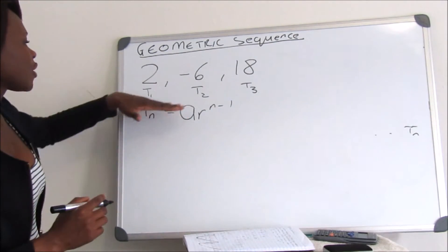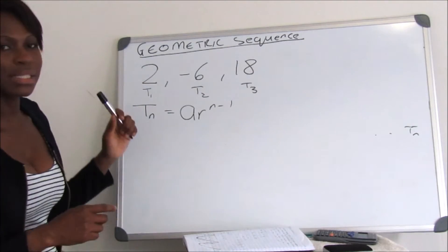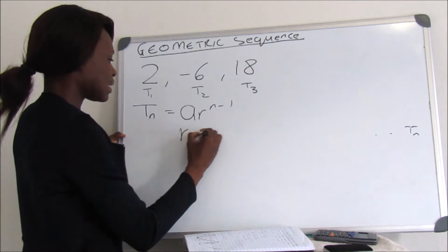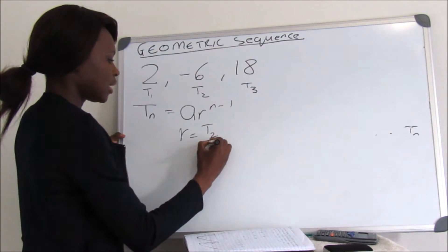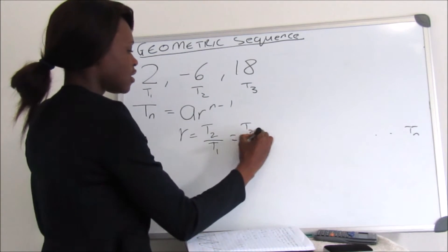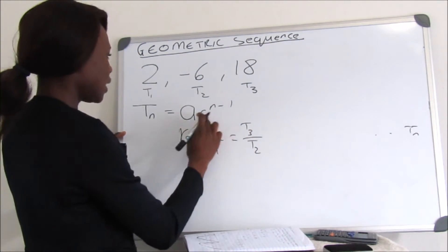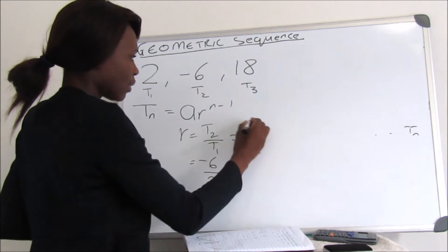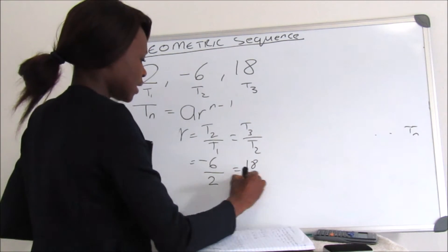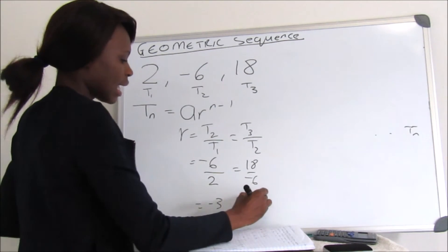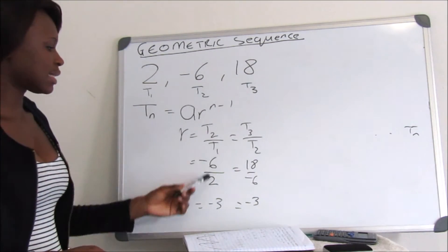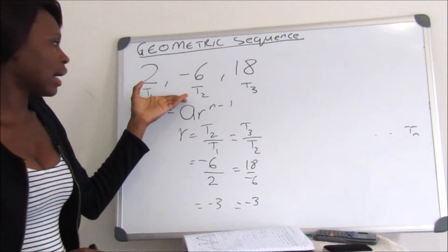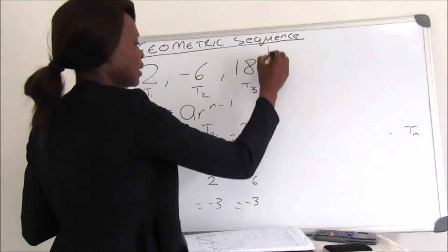Our A, which is the first term, equals 2 from the sequence. To find R, the common ratio, we say T2 divided by T1 equals T3 divided by T2. That is negative 6 divided by 2, and 18 divided by negative 6, both giving negative 3. Since the common ratio is the same, this confirms that our sequence is indeed a geometric sequence.